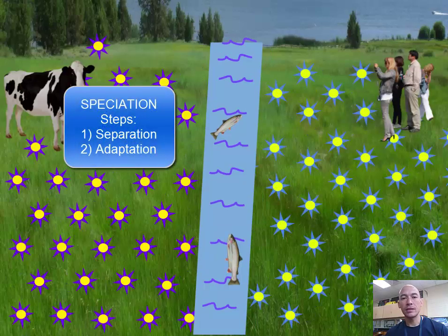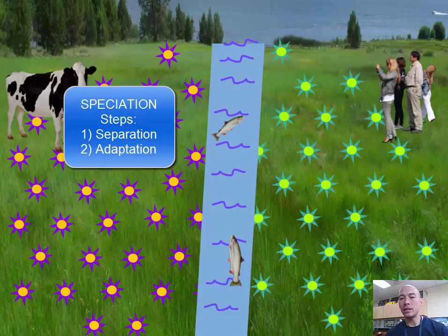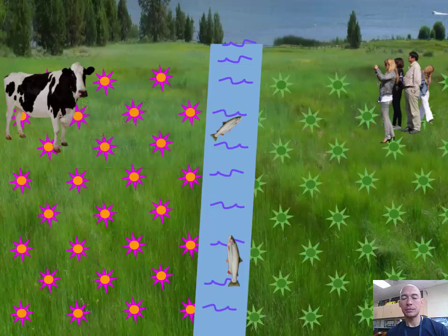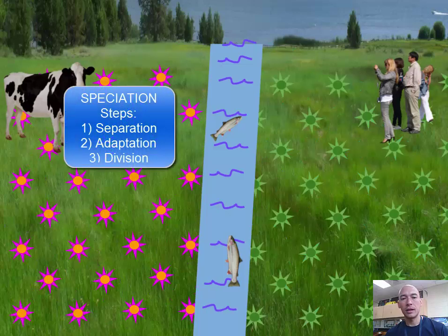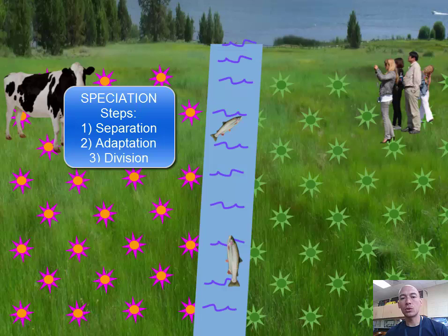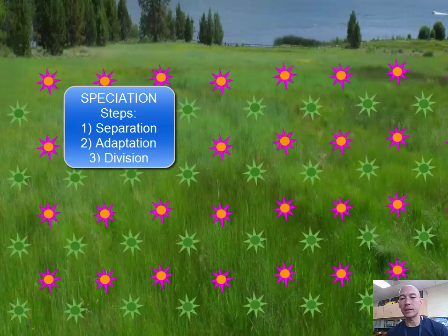The second step is Adaptation. This happens to each population, but in different ways — they each adapt differently to different environmental pressures. Finally, we have Division. This occurs when the populations are genetically so different that they cannot produce fertile offspring together, making them two species.